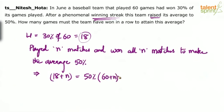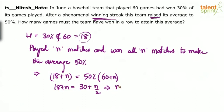Simplify and you will get the answer. So we get 18 plus N equals 50% of (60 plus N), which is 30 plus N over 2. From this we get N over 2 equals 12, or N equals 24, and that is your answer.